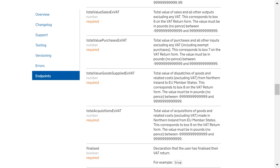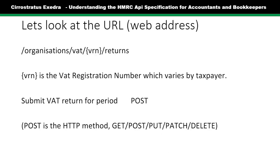The URL — that's the web address — you don't need to worry about it because you never type these things in; they're always done by the software. But it shows you what varies in the information sent to HMRC. For instance, the VRN, the VAT registration number, varies for each taxpayer. So the web address will be whatever the domain name is for HMRC's server, then 'organisations/vat/', then the VAT number, then 'returns'. Obviously, if you haven't got a VAT number, you can't submit a VAT return.